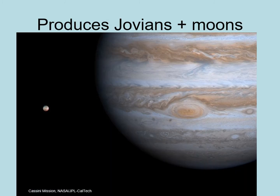Gas accretion appears to be responsible for most of the mass of Jupiter and Saturn. Their cores are around 10 Earth masses, with 85 to 300 Earth masses of accreted hydrogen and helium gas. Uranus and Neptune are a little more complicated. They also have cores around the same size, but they only have a few Earth masses of hydrogen and helium. It may have happened late enough that there wasn't much gas left to accrete in the outer solar system.